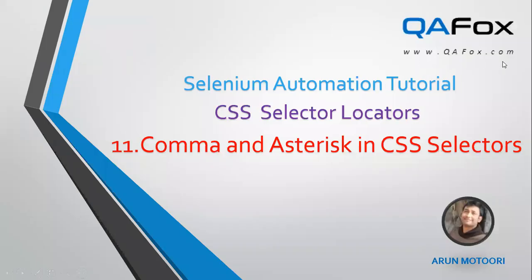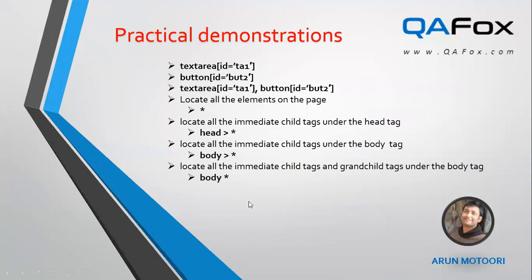Hello everyone, welcome to qfox.com. This is Arun Motori. In this Selenium automation tutorial series, I am going to continue with the topic CSS selector locators. I've already covered 10 parts in the previous videos. In the current video session, I am going to cover the 11th part — using comma and asterisk symbols in CSS selectors. Let's get started.